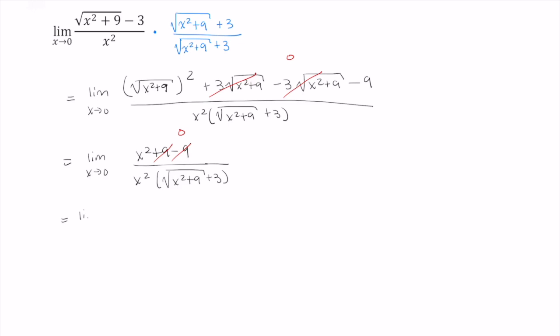And then since this is x squared in the numerator, we have its twin here in the denominator multiplied to everything else. These just become 1, something divided by itself is 1. So this is the limit as x approaches 0 of 1 over the square root of x squared plus 9 plus 3.